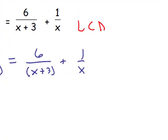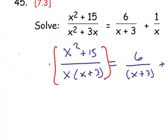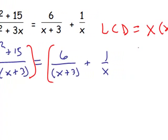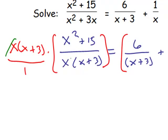The LCD for this whole equation is x times x plus 3, and again, because we have an equation, we can multiply each side by x times x plus 3, and we can even put it over 1 if we want. The right side also by x times x plus 3, and we'll do this very carefully. On the left side, the x that we multiplied by divides out with that x, the x plus 3s divide out.